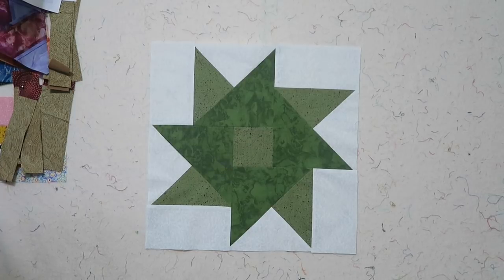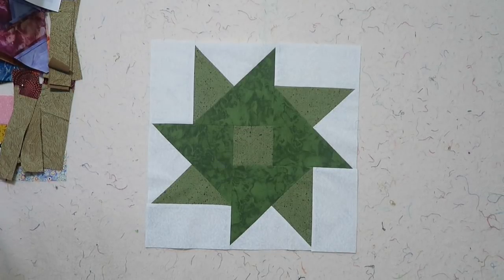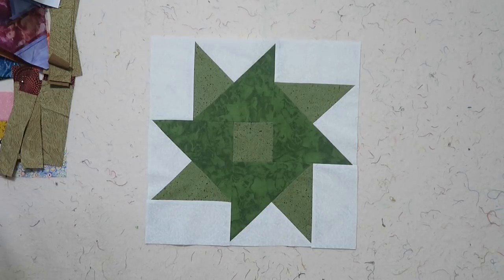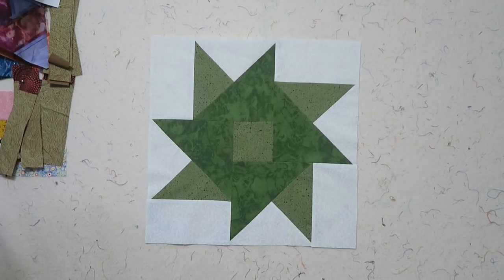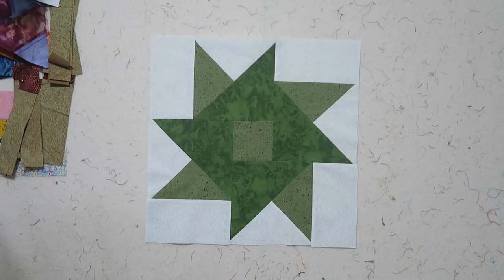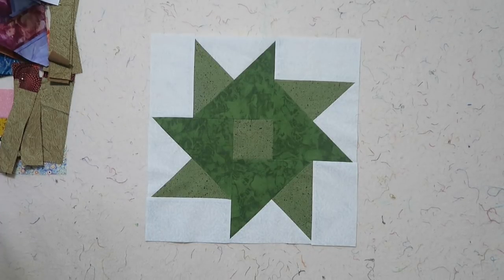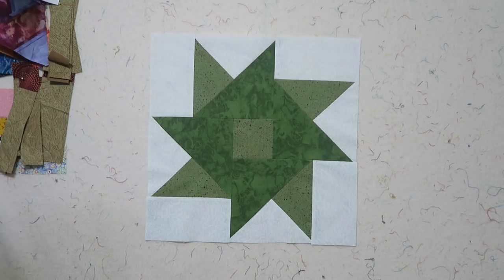So here is my completed block and my partial seam line is up on the top. I just want to make sure that when you complete your partial seam that you start and end in the same place. That way your seam will not have a zigzag in it so that everything will match up in your completed block.